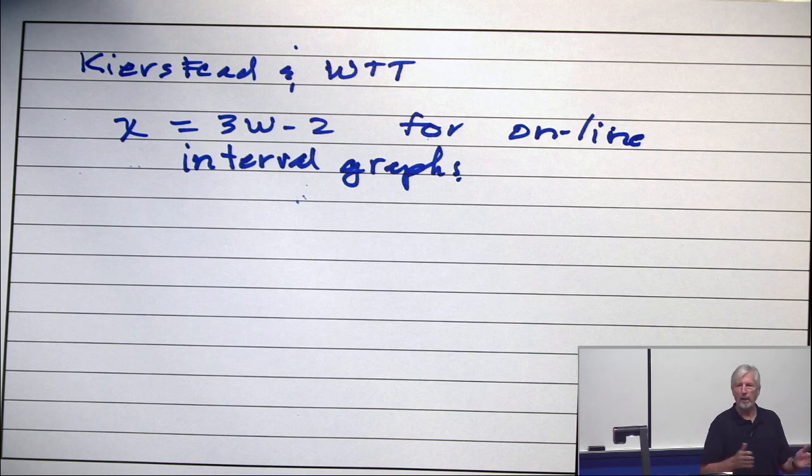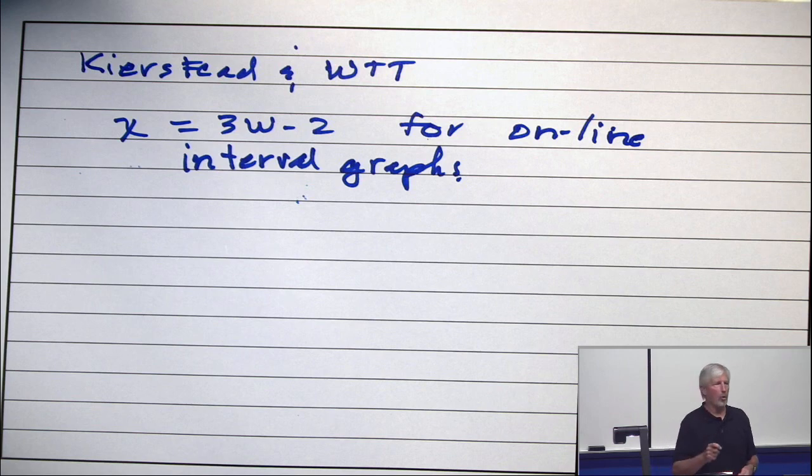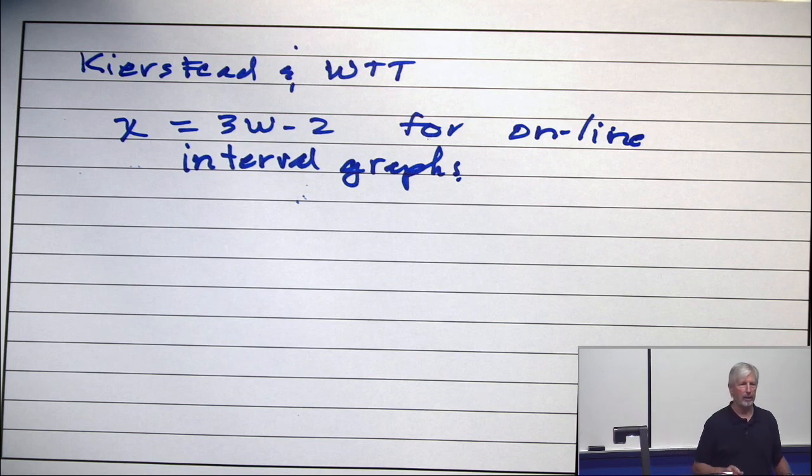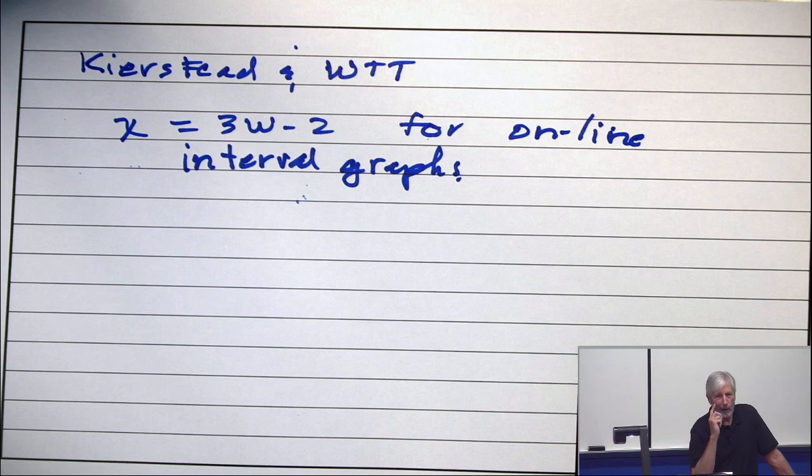So when you call up, do internet, what have you, and order a train ticket, somebody assigns you a seat. That is an online coloring of an interval graph.